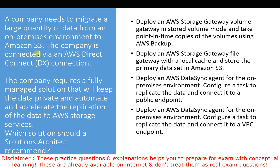The requirement is to migrate data privately and with acceleration. Since the company requires data to remain private, we can't use the public endpoint — data would travel over the internet — so option three is eliminated. The key distinction between the remaining options is: AWS DataSync is used to automate and accelerate the replication of data to AWS storage services, while AWS Storage Gateway is designed for hybrid scenarios where servers need local access to data.